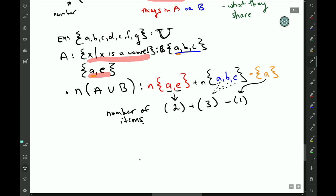So the number of items in the union is two plus three minus one, or simply four. That is what our principle states: the things they share minus the intersection.